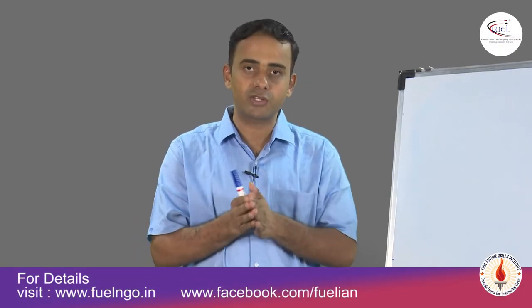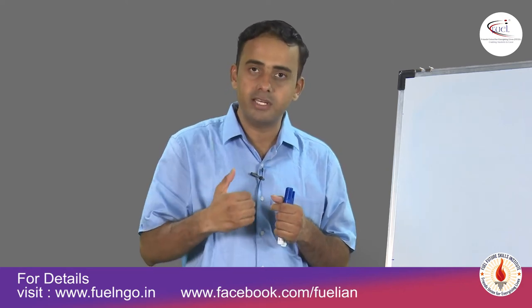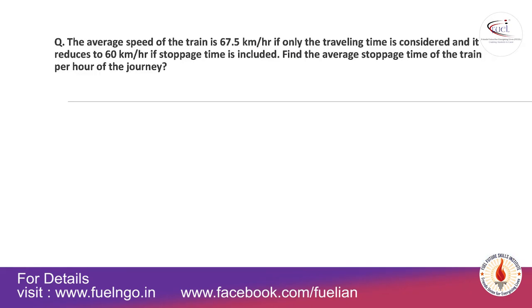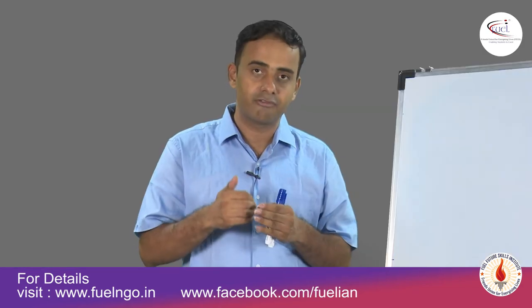In the next example we'll see one more application where distance is constant. When solving a problem on time, speed, and distance, the key is to identify what is constant. The problem says: the average speed of a train is 67.5 km/h if only traveling time is considered, and it reduces to 60 km/h if stoppage time is also included. Find the average stoppage time of the train per hour of the journey.